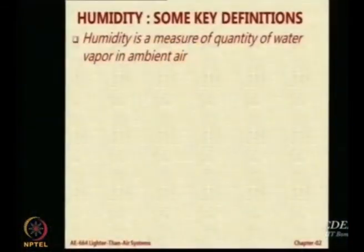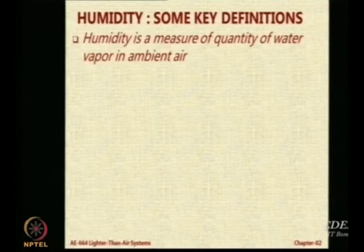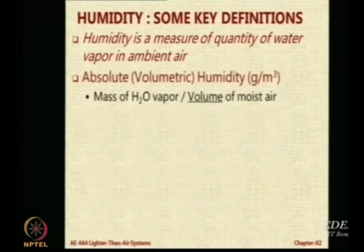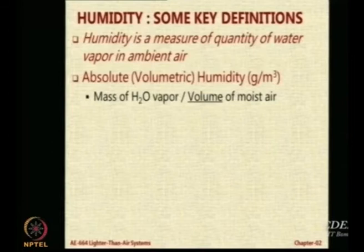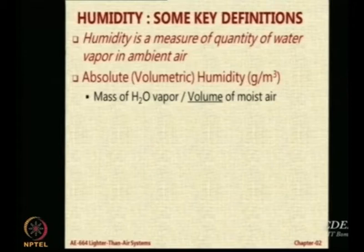What is humidity? It is an indication of how much water vapor is there in the ambient air. Interestingly, there are several definitions of humidity, so we will revisit them very briefly. There is something called absolute humidity, also called volumetric humidity, where you look at the mass of the water vapor upon the volume of the moist air — moist air means air which has got water vapor in it. That is absolute humidity: how much mass of water vapor you have per volume.